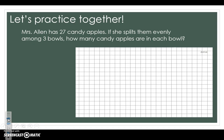Mrs. Allen has 27 candy apples. If she splits them evenly among three bowls, how many candy apples are in each bowl? We're going to solve it the same way. First, let's pull out our division problem, which is 27 divided by 3.